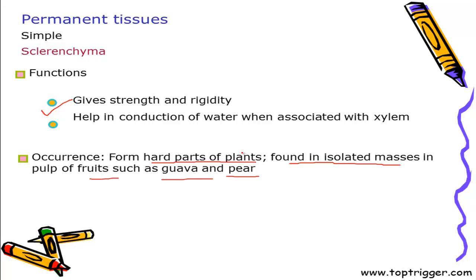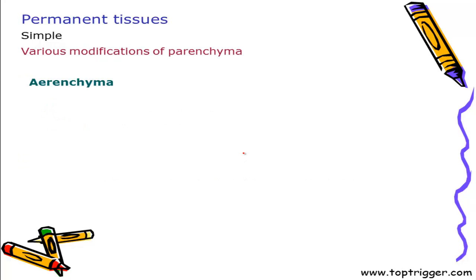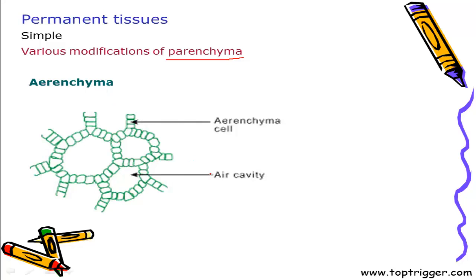This is all about the simple permanent tissues. There are certain modifications found in parenchyma. One modification is aerenchyma. In case of aerenchyma, air cavities are present. This air cavity provides buoyancy and aerenchyma is found in hydrophytes.